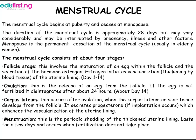Corpus luteum occurs after ovulation, when the corpus luteum — or scar tissue — develops from the follicle and secretes progesterone. If implantation occurs, this enhances the vascularization of the uterine lining. Menstruation is the periodic shedding of the thickened uterine lining, lasts for a few days, and occurs when fertilization does not take place.